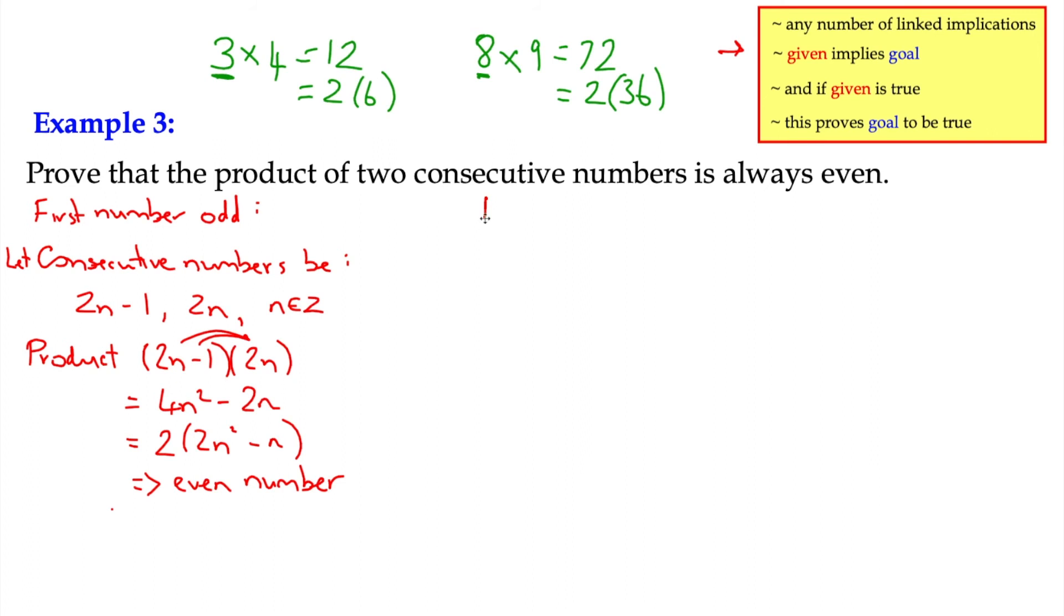But let's just double check, what happens if the first number is even? Does that make a difference? Well, we could argue that it doesn't. So let our consecutive numbers be, I'm just going to have an even number first, 2n, and then the next number would be odd 2n plus 1, where n is an integer.